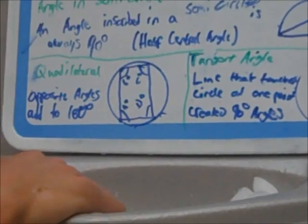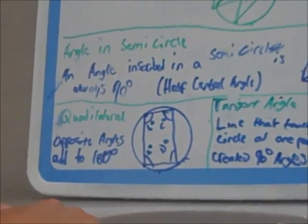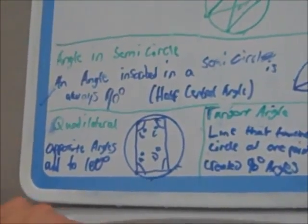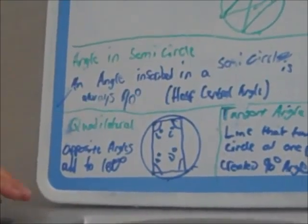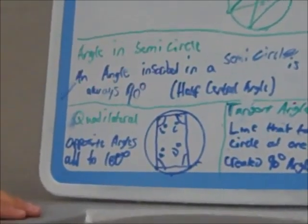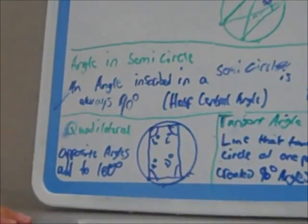So the next theorem, as I was just talking about, is if a quadrilateral is inscribed in a circle. In the quadrilateral, opposite angles are supplementary, or they add up to 180 degrees.